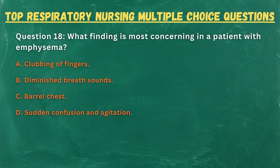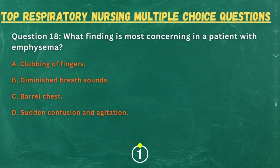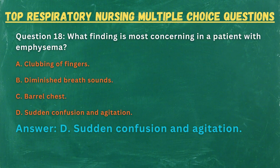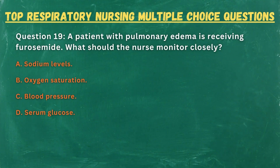Question 18. What finding is most concerning in a patient with emphysema? A. Clubbing of fingers. B. Diminished breath sounds. C. Barrel chest. D. Sudden confusion and agitation. Answer: D. Sudden confusion and agitation.